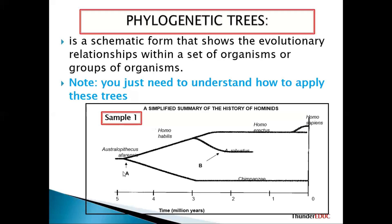Let's interpret phylogenetic tree sample number one. We count from zero on this side going across. We are saying that Australopithecus afarensis originated around 4.8 million years ago — we can't say 5.5 because zero is on this side, so counting gives us approximately 4.8.